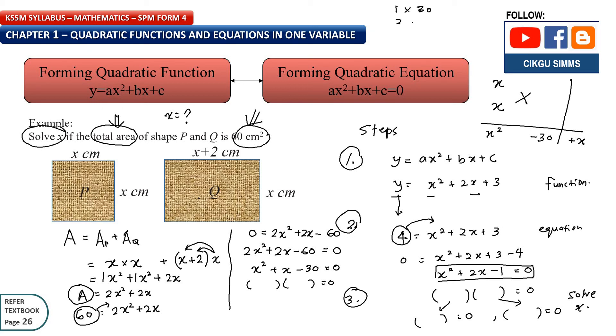1 times 30, 2 times 15, 3 times 10, 4, 5 times 6. So here is 1, right? So which pair will give you 1?